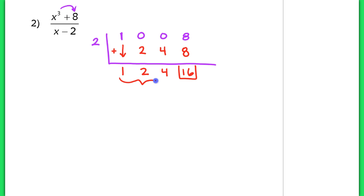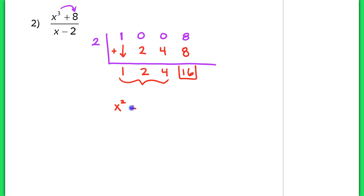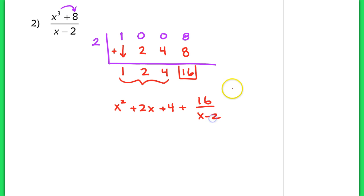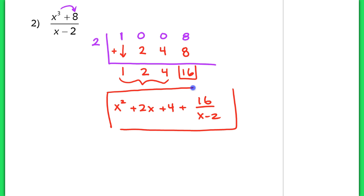This is my remainder. These represent the coefficients of a polynomial that is one degree less than the degree of the numerator. So we've got 1x squared plus 2x plus 4, plus a remainder of 16 over x minus 2. That is the quotient of x cubed plus 8 over x minus 2.